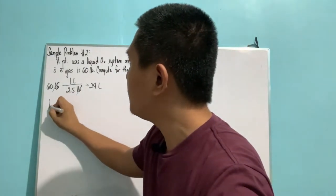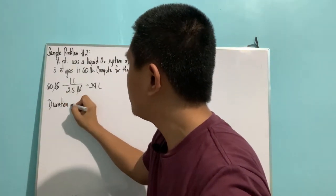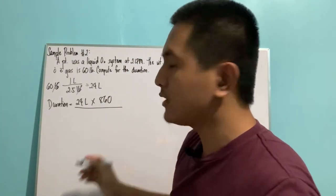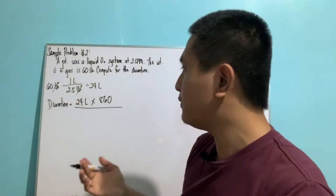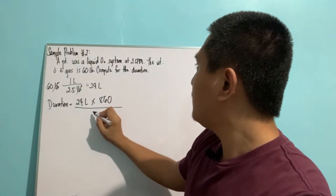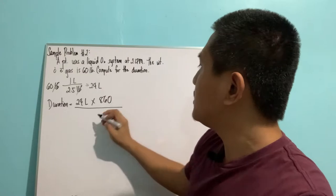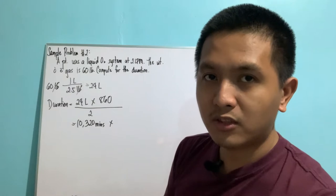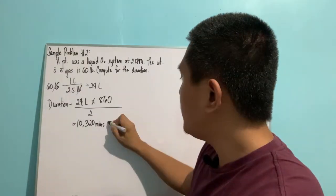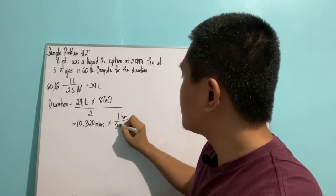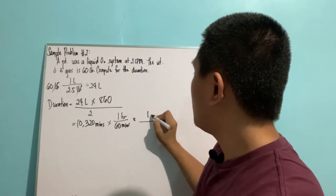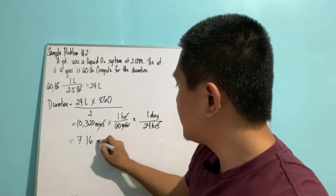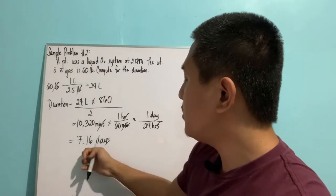60 divided by 2.5 gives us 24 liters of liquid oxygen. We can now proceed with the formula: duration equals 24 liters of liquid oxygen multiplied by 860 liters of gaseous oxygen — the conversion factor — divided by the flow rate of 2 LPM, giving us 10,320 minutes. We need to convert this into days. 60 minutes per hour and 24 hours per day gives 7.16 days.